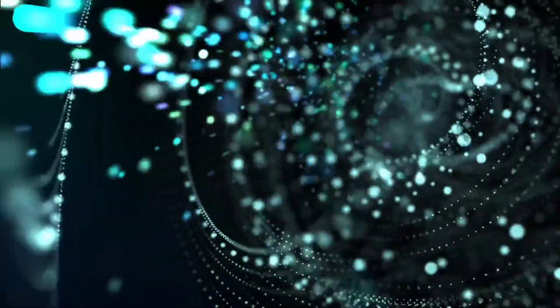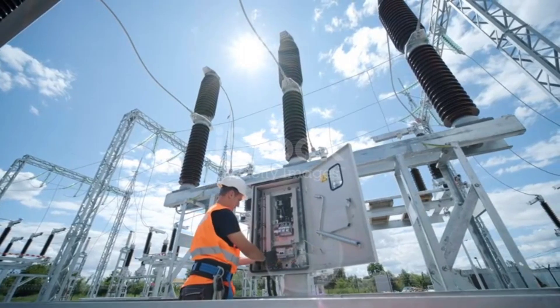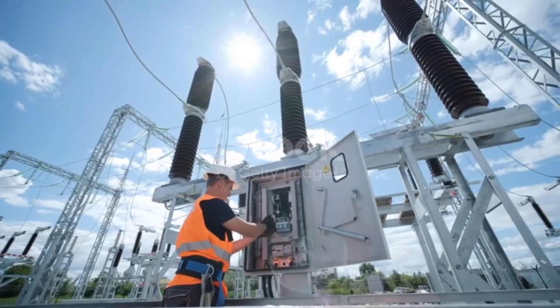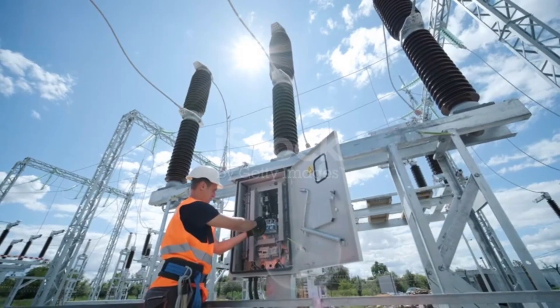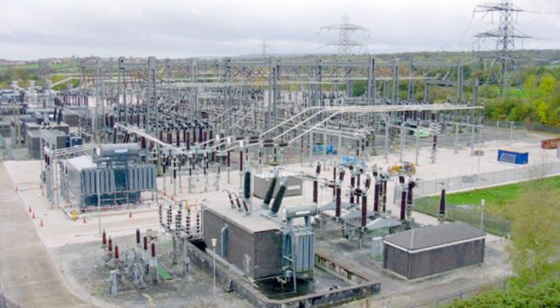As we have covered the working principle of vacuum circuit breakers, let us now explore their applications. VCBs are widely used in various industries and settings due to their reliability, efficiency, and safety features. In power distribution systems, VCBs play a crucial role in protecting electrical equipment and personnel from damage caused by electrical faults. They are designed to interrupt electrical faults quickly and efficiently, minimizing the risk of damage to equipment and injury to personnel. VCBs are particularly useful in power distribution systems due to their high reliability and low maintenance requirements.